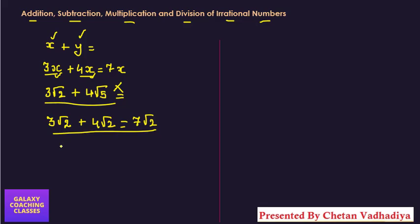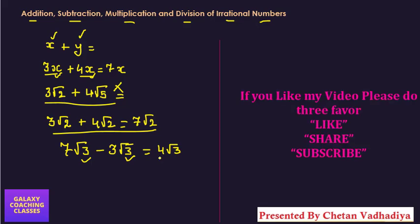In subtraction also, you need to check. Suppose you are having 7√3 minus 3√3. You can see the term inside the root is same or the number inside the root is same. So you can subtract this because they are like terms and the answer will be 4√3. For addition and subtraction, you need to see whether they are like terms or not. If they are like terms, then and only then you can add or subtract.